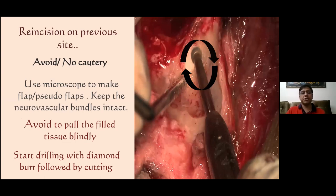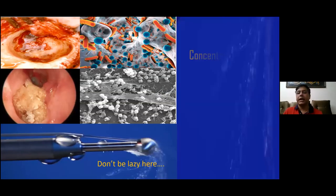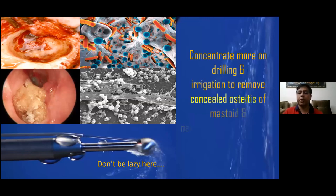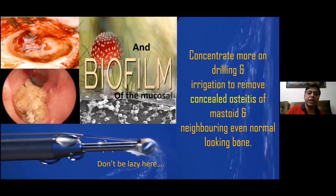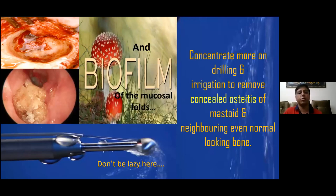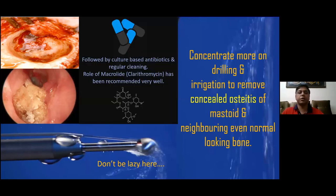Don't be lazy — do more and more drilling. One of the powers of failure or recurrent discharge is concealed osteitis in these cases. We should drill out as much as the problem requires, remove more bone whether it looks normal or not, because osteitis requires removal of all affected bone from all around. With drilling you can also remove the biofilm from the mucosal coat and hidden mucosal areas — that is a key point. As per culture sensitivity results, treat the biofilm bacteria. Regular cleaning post-operatively with macrolides and chlorhexidine has been proven beneficial, and we have been getting good results in biofilm cases.